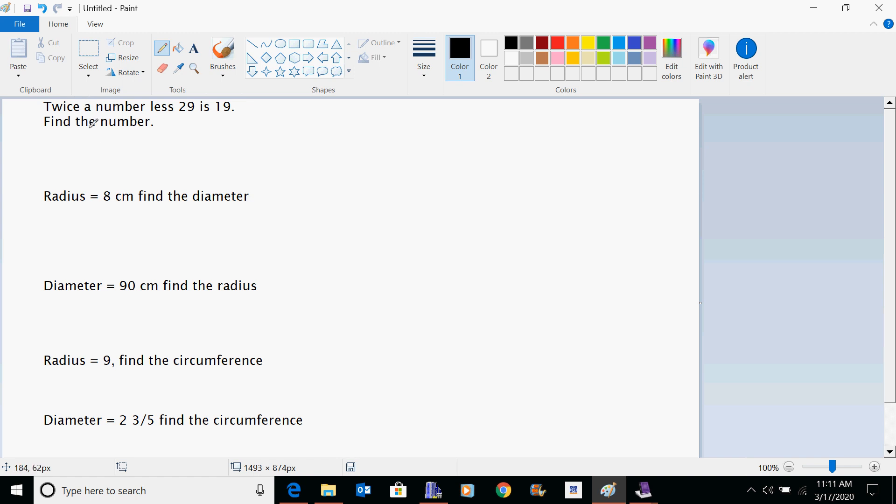So first of all, when it says to define a variable, for example, on this problem here, twice a number less 29 is 19, it means that you have to actually do something like, say, n equals the number. Now, you're not going to be writing it like I'm writing it right here. You'll type it in, and then write an equation would be something like 2n minus 29 equals 19. So you would be able to type in something like that on the line, and that would be something that I'm going to be evaluating, can you do.